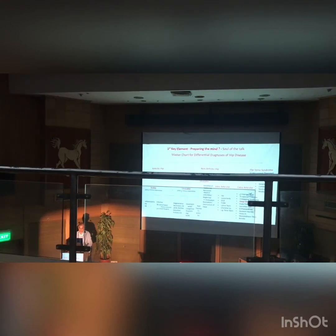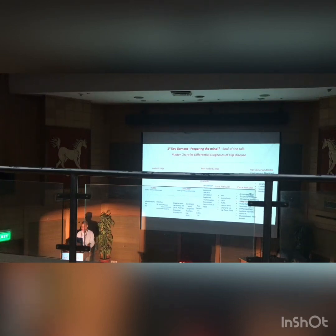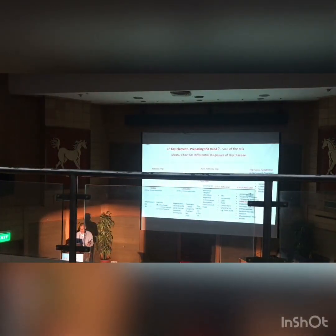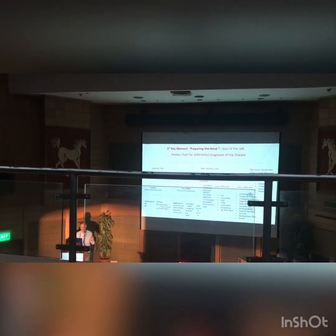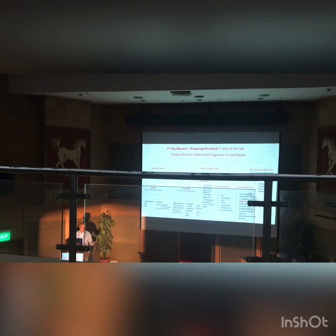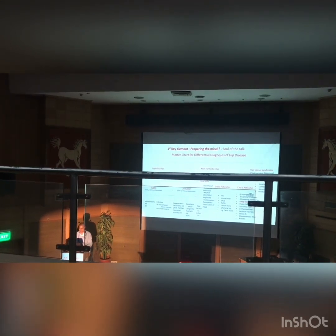Hip-spine syndrome can be simple, complex, secondary, or misdiagnosed. Simple means there is a pathology in the spine and pathology in the hip, but the patient comes with only one symptomatic pathology. Complex means both sides are symptomatic and the clinician must decide — by doing a thoracic block or intra-articular block — which of the two is causing the current problem. Secondary means there is a long-standing hip deformity and the patient presents with scoliosis and pain. These are secondary hip-spine syndromes, and misdiagnosis is the fourth category.